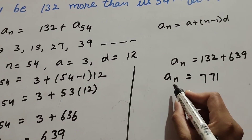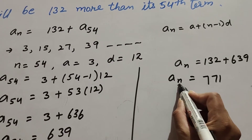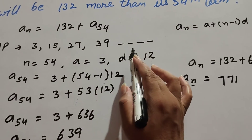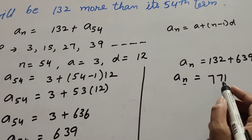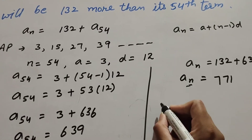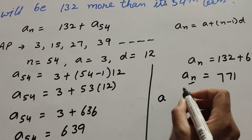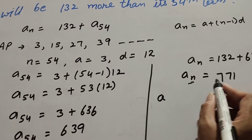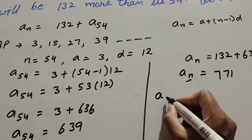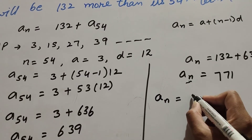This is the nth term of the AP that is 132 greater than the 54th term. In this AP series we find that 771 is which term of the AP. So we find n, where a_n is 771, the last term, and n is the total number of terms.